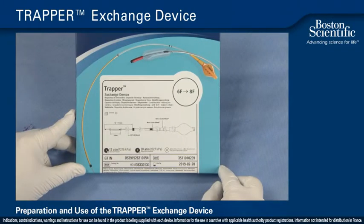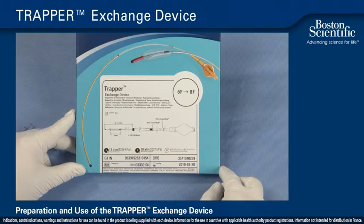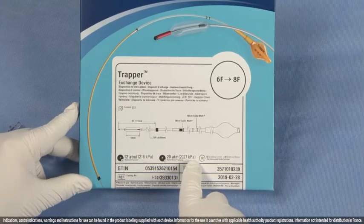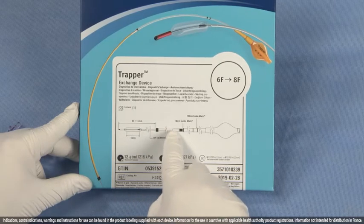I'm going to walk you through the steps to prepare and use Trapper. On the label, you can get some important information. The first is the working pressure, 12 to 20 atmospheres, and the second is the adjustable feature on the telescope.